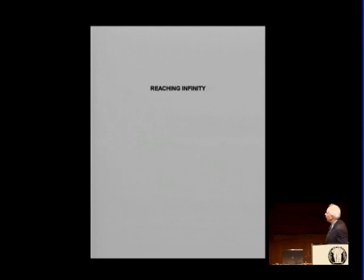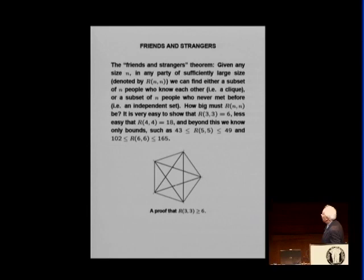So now I want to explain a little story about very large numbers. So, reaching infinity. Friends and strangers: given any size n, in any party of sufficiently large size, and then it's R(n, n), there are two n's because there are variants which require different numbers. We can find either a subset of n people who know each other—I'll call it a clique, or a mafia, if you want—or a subset of n people who never met before, these strangers. So, friends and strangers. So how many, how big must be the size of the party to guarantee that either you find a set of n strangers or a clique of n people?